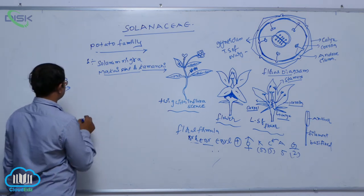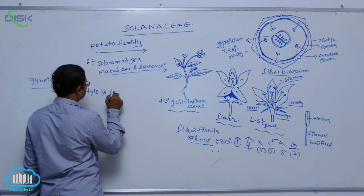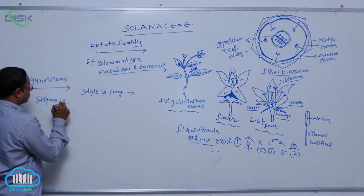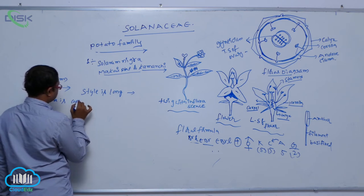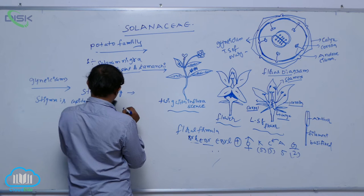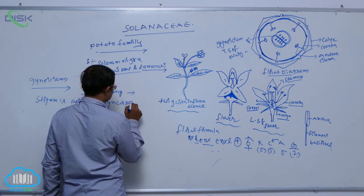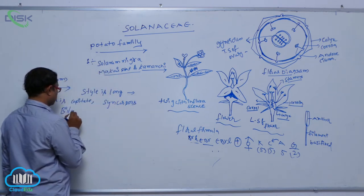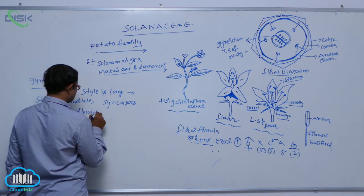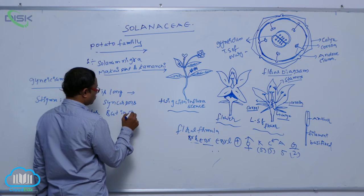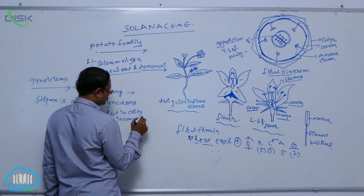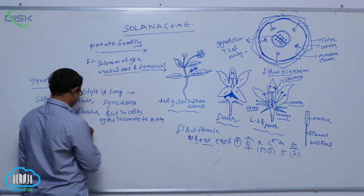In this gynoecium, generally the style is long and the stigma is capitate. The ovary is syncarpous and bilocular, but in Chili, by the incomplete septa, it appears unilocular.